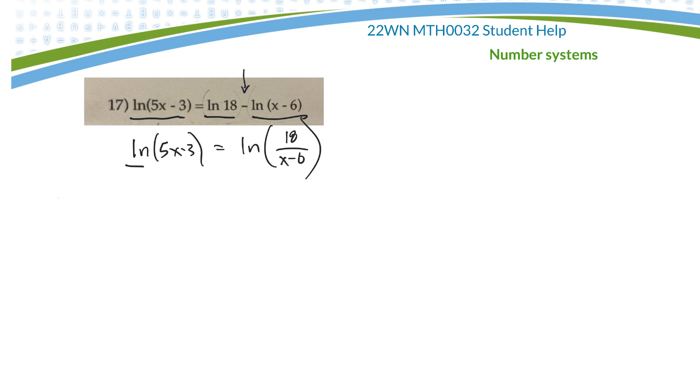Then, since I have a ln on this side and a ln on this side, I can use the property of logarithmic equality to just drop those logs. So my next step would be 5x minus 3 equals 18 over x minus 6.